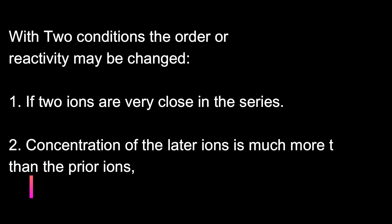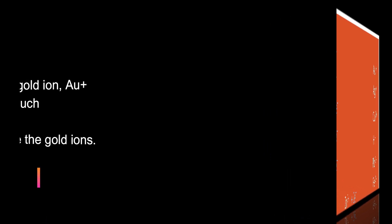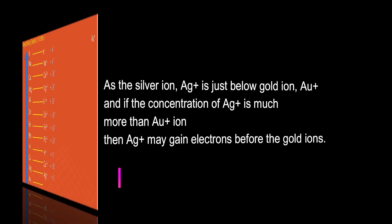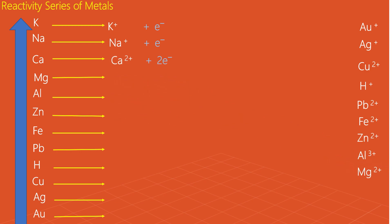However, with two conditions, the order may change slightly. This occurs when two ions are in close competition in the electrochemical series — for example, gold ion and silver ion, which are very close. The other condition is when the concentration of the lower-priority ion, such as silver, is much more than the concentration of gold ion. Then silver ion may gain electrons before gold ion. But this is not possible for two ions that are far apart in the series, such as hydrogen ion and sodium ion. Even if the concentration of sodium ion is much more than hydrogen ion, hydrogen ion will still gain electrons first, because the tendency is hugely different.